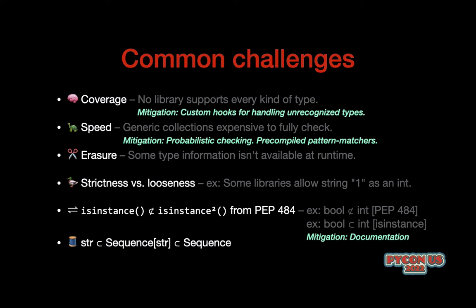Some challenges to be aware of: libraries don't support all of the typing constructs used everywhere. Sometimes there are speed issues with checking things like list of str. Some types of annotations are erased entirely at runtime, such as NewType and TypedDict, so that's tricky. Pydantic will treat things loosely — for example, it will treat the string '1' as an int. There's also the interesting case that isinstance at runtime and the equivalent isinstance from PEP 484 disagree on a couple of things, especially Booleans and ints. And there's ever the problem of string being also a sequence of itself, which is kind of bizarre. That's all I've got — thanks for listening.